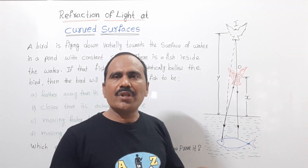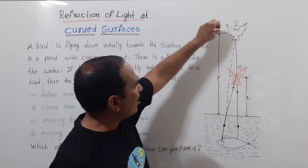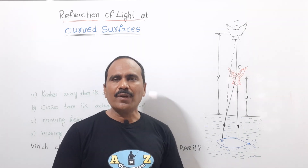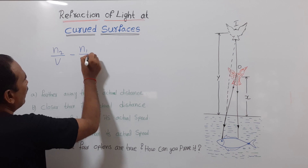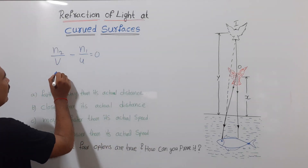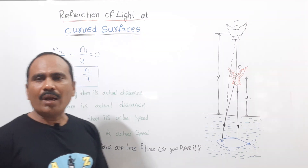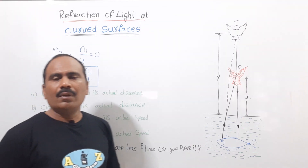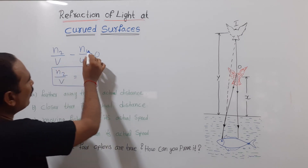We already know the refraction of the plane surface. The formula for the refraction of plane surfaces is: n2/v minus n1/u = 0, which can also be written as n2/v = n1/u.